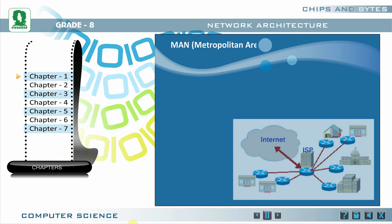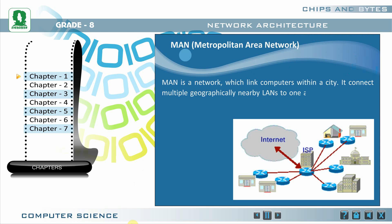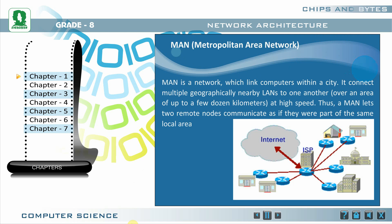MAN (Metropolitan Area Network): MAN is a network which links computers within a city. It connects multiple geographically nearby LANs to one another at high speed. Thus, a MAN lets two remote nodes communicate as if they were part of the same local area network.